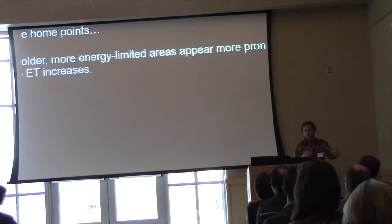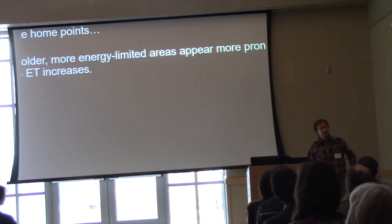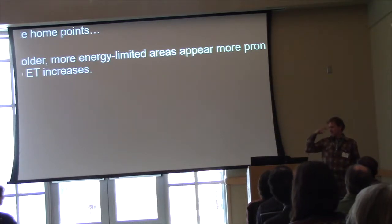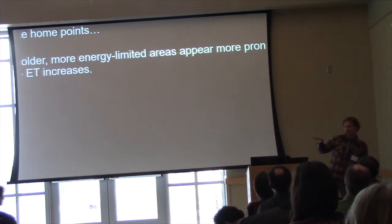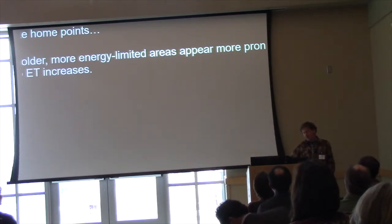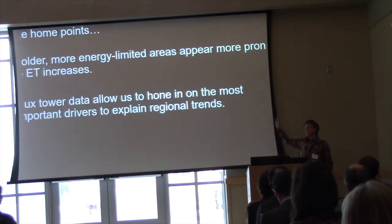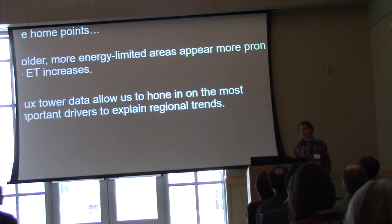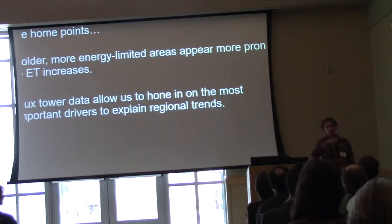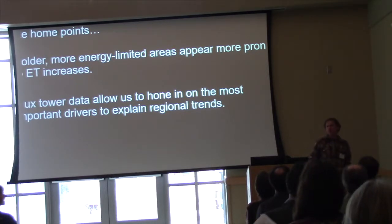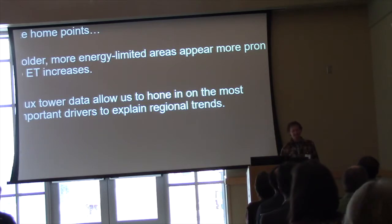Some take-home points: colder environments seem to be more sensitive in terms of increasing evapotranspiration — potentially an alleviation of energy limitation within the northern extent that is not happening at the southern extent, where something else is happening. These flux tower data are really allowing us to dig deeper into understanding the potential mechanisms. I've presented data from a couple of sites in New Hampshire and one from Maine; there are some in Massachusetts, but there are zero flux towers in Vermont associated with the AmeriFlux network, so there's a need there.